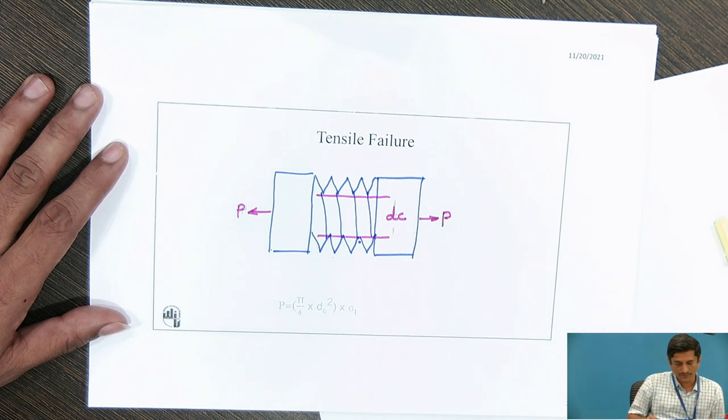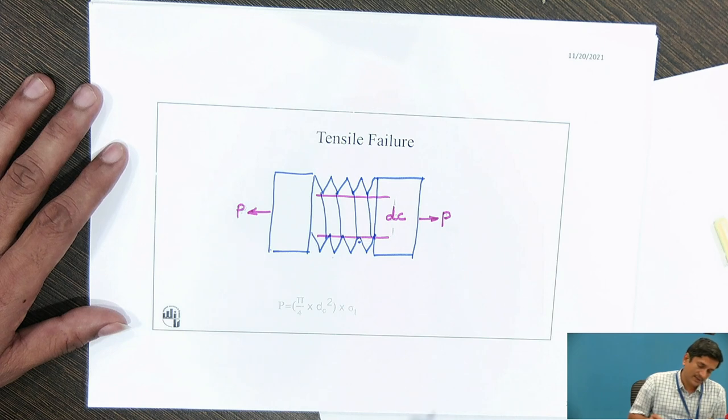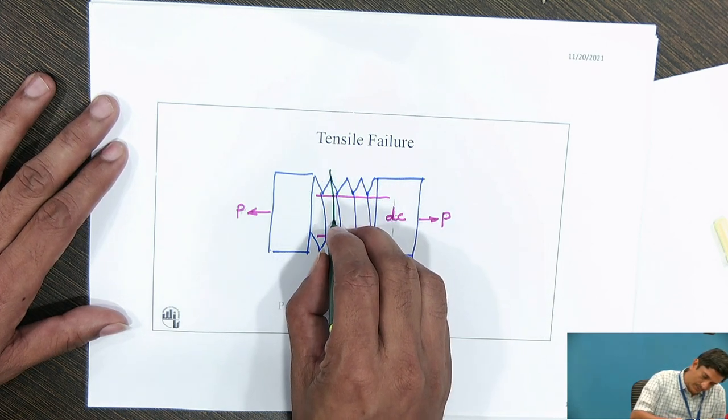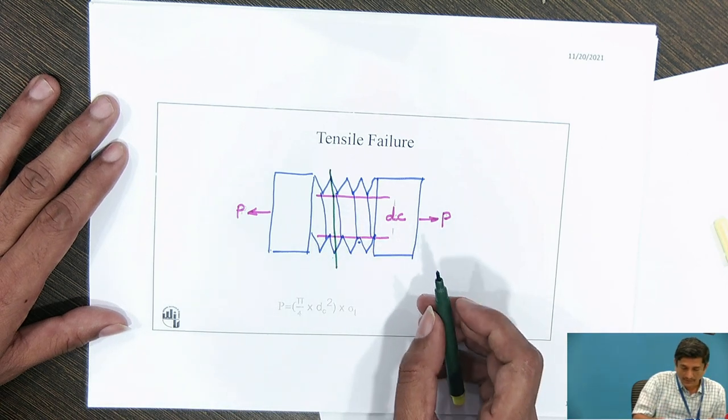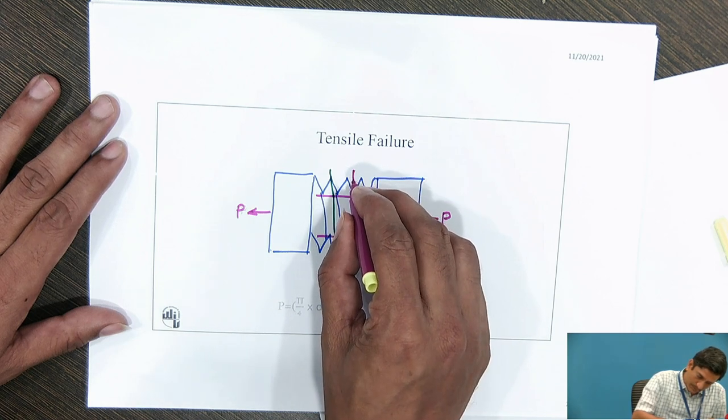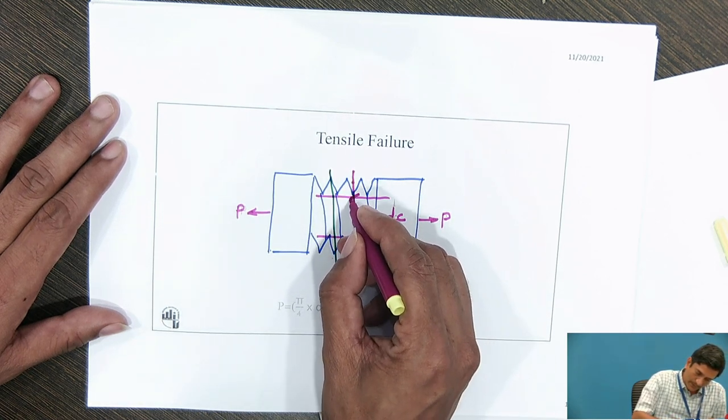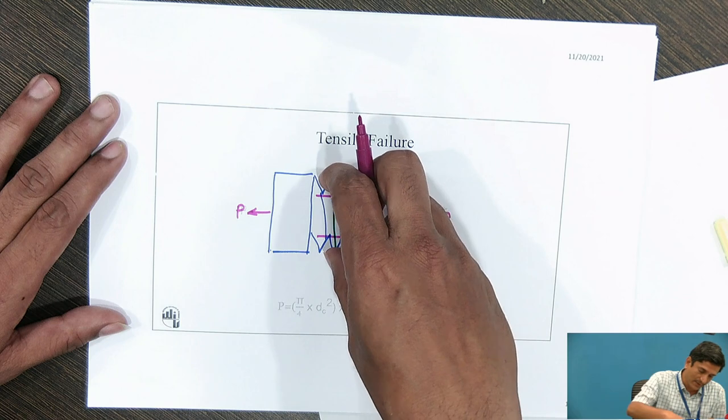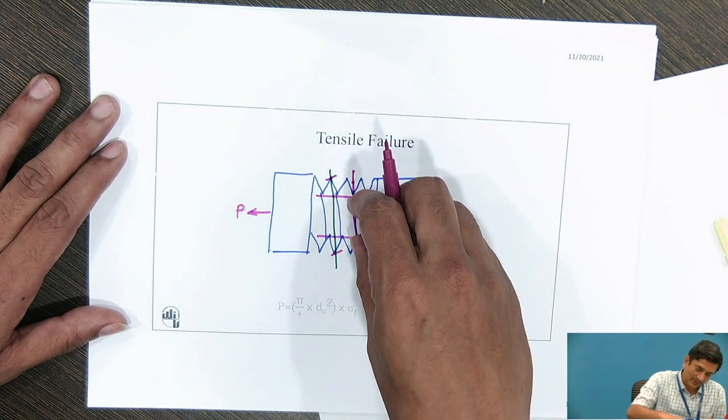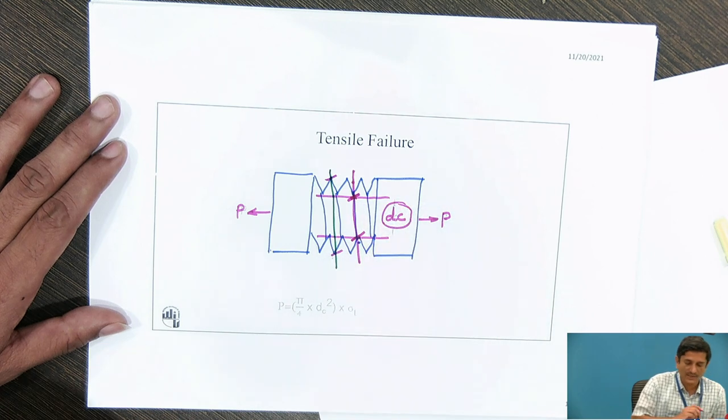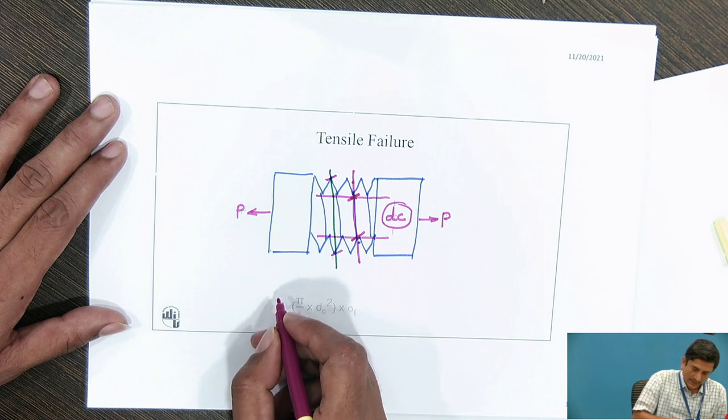This force P. Again, I need to find out which is the critical area. The component is not going to fail at the area indicated by this line, but rather it is going to fail at the area I am showing right now. This length is going to limit, not this, because this diameter is larger than the core diameter. Therefore, core diameter is going to govern the tensile failure of this rod. Hence, I can write the equation.